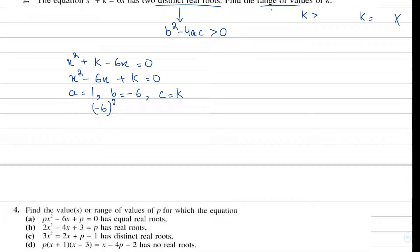So b squared means minus 6 squared minus 4 times a times c. That's 36 minus 4k, and we set this greater than zero because we want the range where the discriminant is greater than zero, giving us distinct real roots. So we have 36 minus 4k is greater than zero.